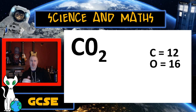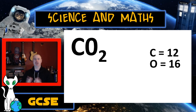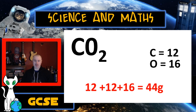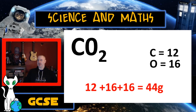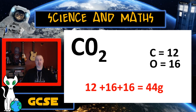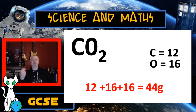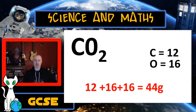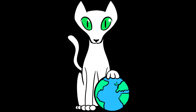I look at the individual elements in it. Carbon dioxide contains carbon (mass number 12) and two oxygens (mass number 16 each). I add them all together: 12 + 16 + 16 = 44. So 44 grams of carbon dioxide is one mole, and it contains 6.02 × 10²³ molecules. That's how you find the molar mass of a compound.